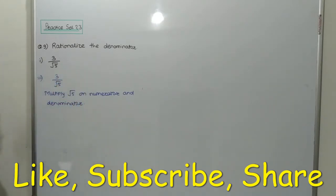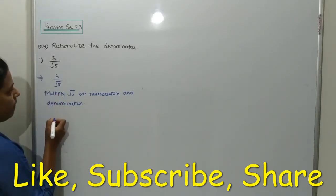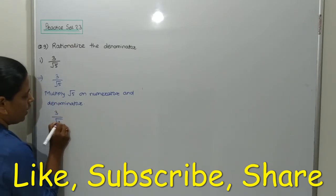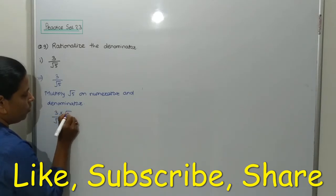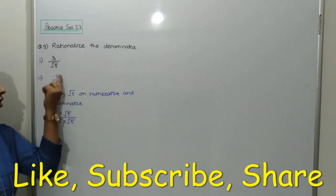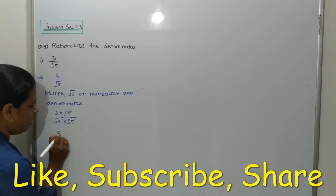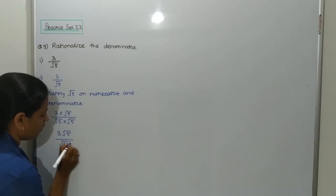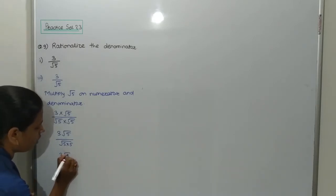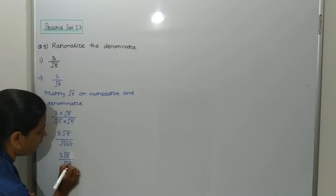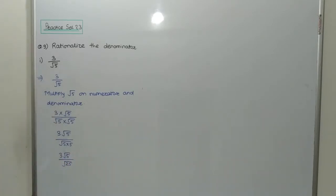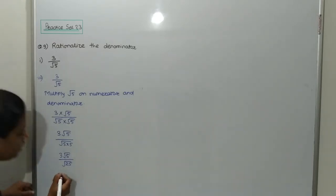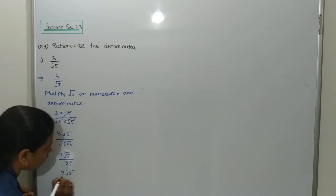Multiplying root 5 on numerator and denominator, we get 3 root 5 in the numerator, and root 5 into root 5 in the denominator. Root 5 into root 5 gives 5 into 5, so the denominator becomes root 25. The value of root 25 is 5 itself. So we get 3 root 5 upon 5.